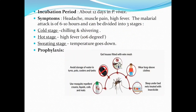The incubation period is about 12 days in Plasmodium vivax. Symptoms include headache, muscle pain, and high fever. The malarial attack lasts 6 to 10 hours and is divided into 3 stages. First is the cold stage — chilling and shivering. Second is the hot stage — high fever of around 106 degrees Fahrenheit. Third is the sweating stage — temperature goes down with profuse sweating.